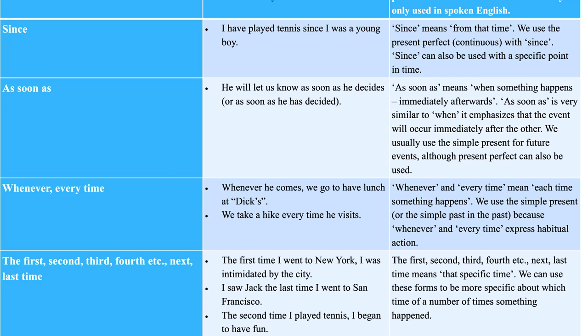Reason: because, since, as, given — indicate the reason for something. Example: 'I couldn't feel anger against him because I liked him too much.' Place: answering the question where — wherever, anywhere, everywhere — talk about the location or position of something. Example: 'He said he was happy where he was.'